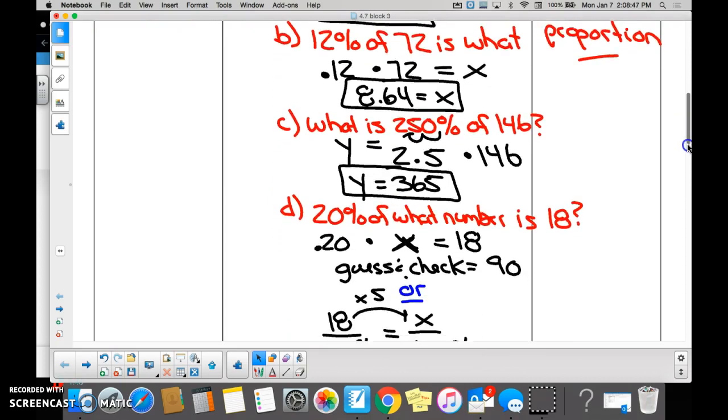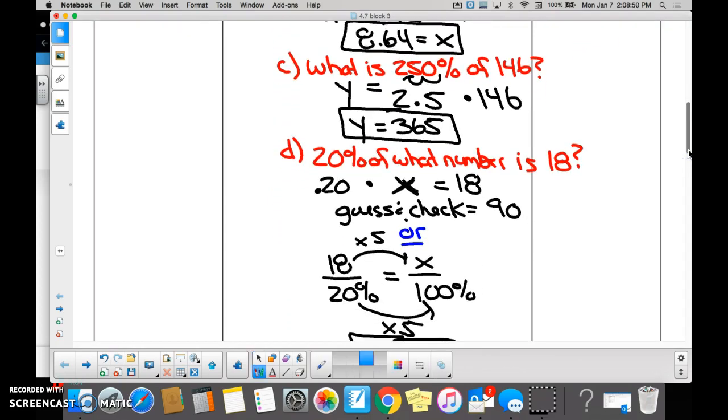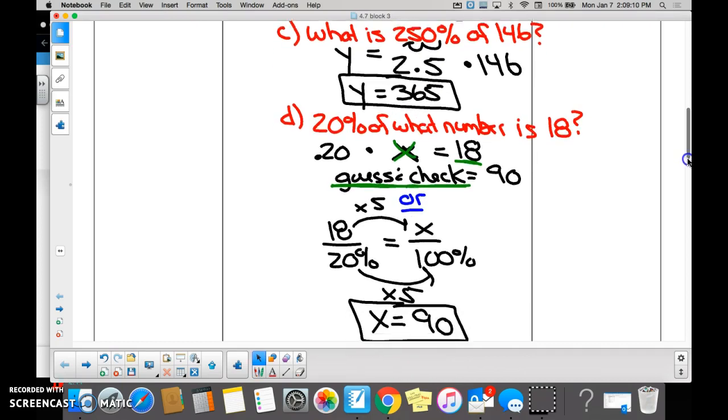In the fact that we needed to figure out what X was by either using the guess and check method. Because you can't type in 0.20 times X on your calculator, you guys know. So you could guess and check to get to 18 by start typing in numbers until you get something that multiplied by 20 hundredths is 18.